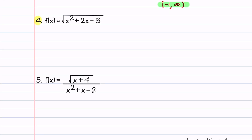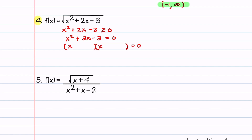Our fourth example is f(x) equals the square root of x squared plus two x minus three. This is also a radical function, but more complicated. We start with the restriction that x squared plus two x minus three has to be greater than or equal to zero. We first look at when x squared plus two x minus three equals zero. We can factor this to get x equals one and x equals minus three.